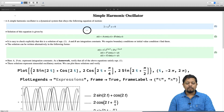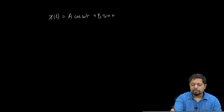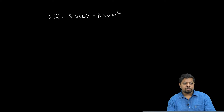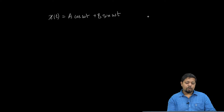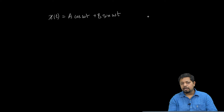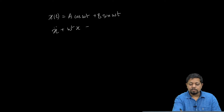The solution of this equation is given by x of t equals a cos(ωt) plus b sin(ωt). It is easy to verify this. One way to solve differential equations is to guess a solution and then check whether it is a solution or not. So we are claiming that x(t) = a cos(ωt) + b sin(ωt) is a solution of x double dot plus omega squared x equals 0.